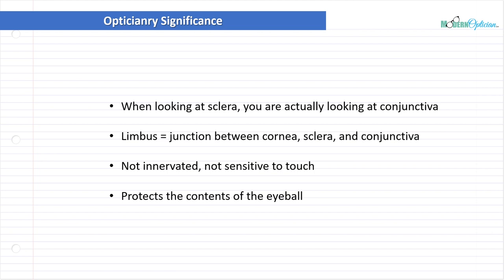So that does it for the sclera. This is a pretty simple one. There's not a whole lot you need to know about the sclera other than it's there and the simple properties that we talked about. I think we're ready now to move on to other parts of the eye. So we'll see you in the next lecture.